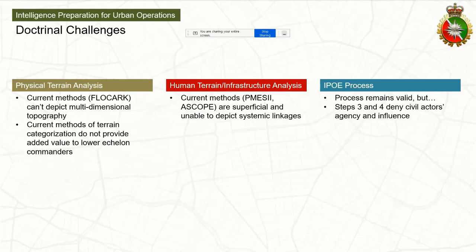When it comes to human terrain and infrastructure analysis, the current methods we use — PMESII (political, military, economic, social, information, infrastructure) — your operational variables, and ASCOPE (areas, structures, capabilities, organizations, people, events) — your civil variables as the Americans call them — they're very superficial. Even when you use the PMESII-ASCOPE crosswalk or matrix, it's really hard to depict the systemic linkages between various aspects of the civil environment.